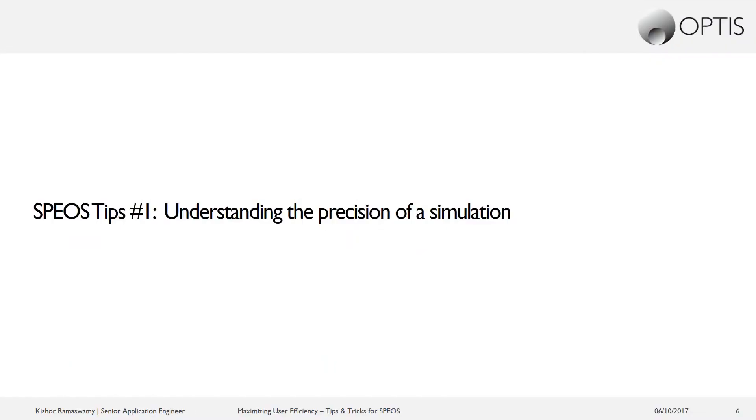Okay, so to get things started off, the first tip that I will be talking about is understanding the precision of a simulation. So here we're talking about when you run a simulation, how many rays do you need to include in the simulation to really trust your results, and what does precise actually mean in the context of a simulation.